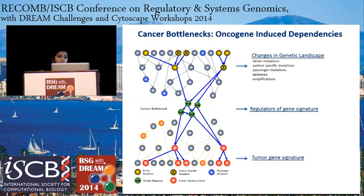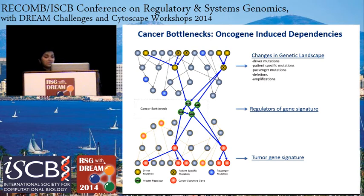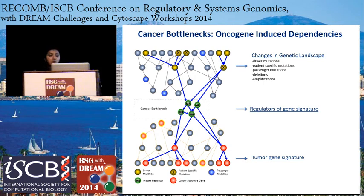Let me explain what we mean by a cancer bottleneck or master regulators. There are changes in the genetic landscape defined by driver mutations, amplifications, and deletions. Some may be passenger mutations, and we have no way of knowing whether they are a direct causal effect or not. However, there is a distinct tumor gene signature that defines how the tumor has adapted to those changes. We think the bottleneck is a set of regulators that control the new tumor gene expression profile — and this is what we hope to identify for the basal subtype.